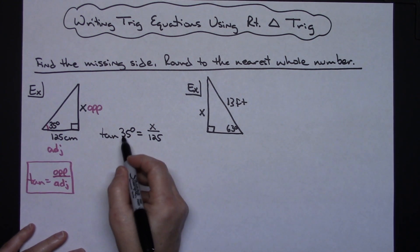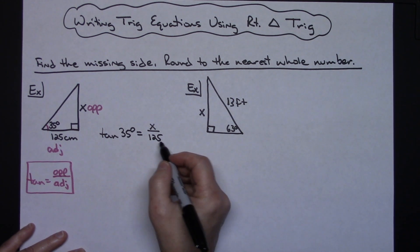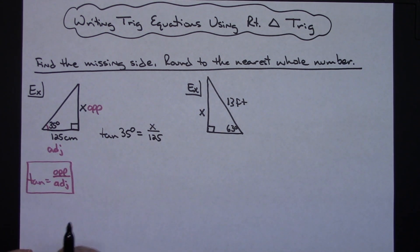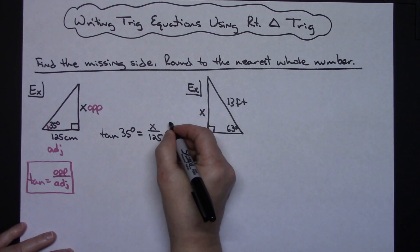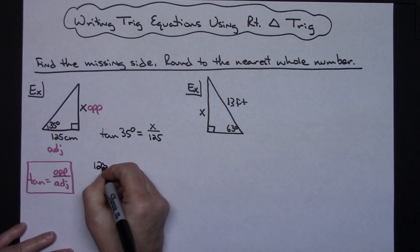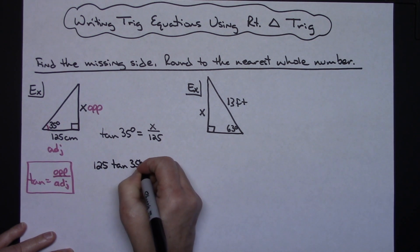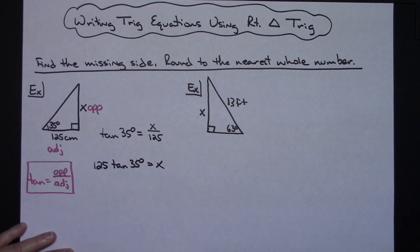I'm not going to grab a calculator too soon. I'll leave that tangent of 35 right there and multiply both sides by 125. When I do that, it crosses out on this side and goes over here, so I'll have 125 times the tangent of 35 degrees, and that equals X.